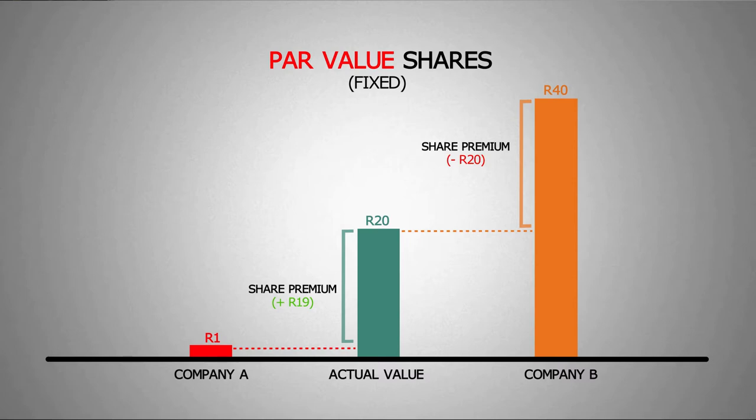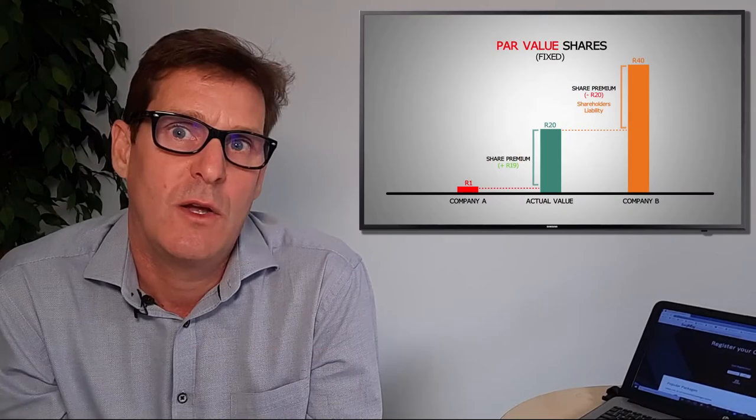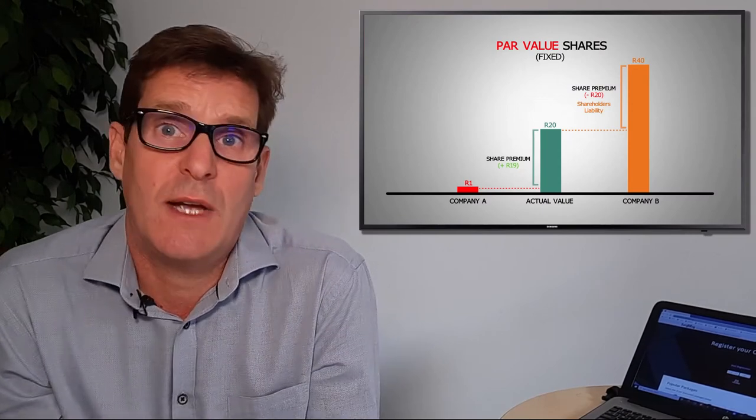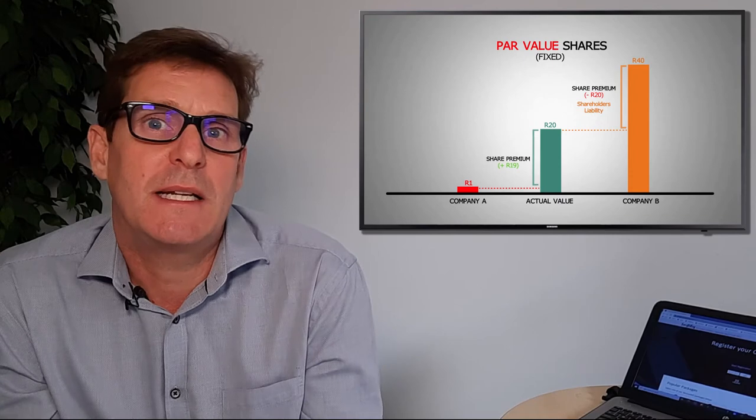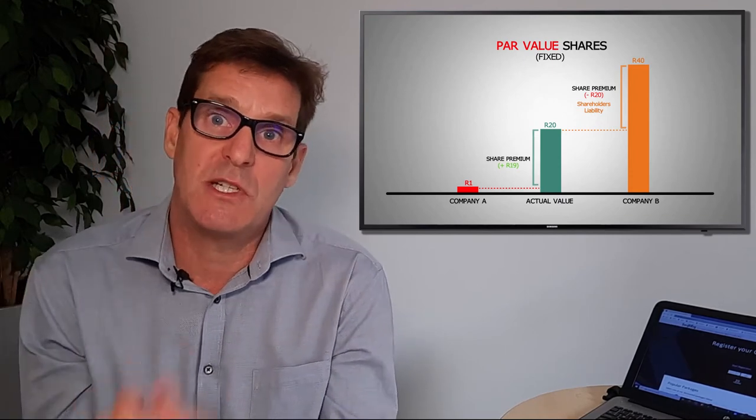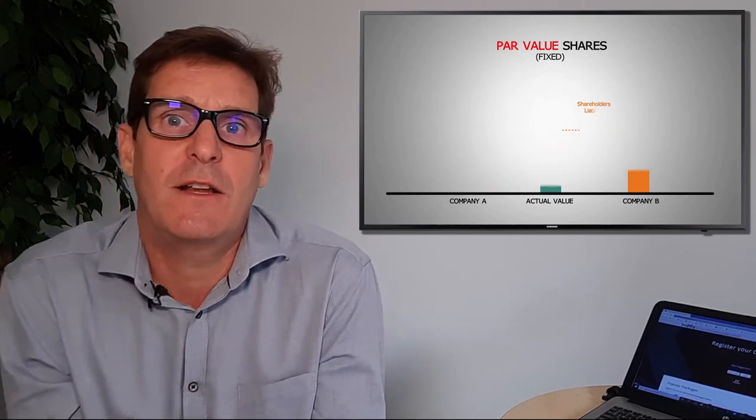So what does this actually mean? If Company B goes bankrupt, the shareholders are liable for the share premium of 20 rand per share, which is not the case for Company A where the shareholders have no risk. To limit the liability of the shareholders, most companies which still have par values set the value as low as possible.